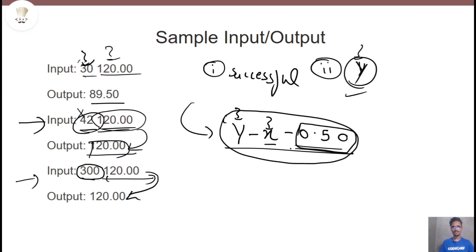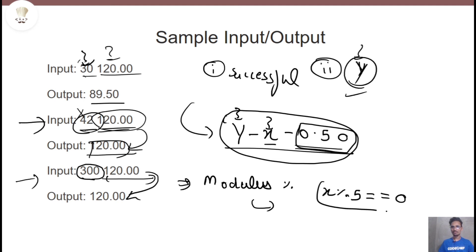One more thing: how do you check if X is a multiple of 5 or not? The answer is the modulus operator. The modulus operator tells us the remainder. If we take X modulus 5 and its value is 0, that means the remainder is 0 — modulus is simply remainder. If the remainder from dividing a number by another number is 0, this means the second number is a multiple of the first. So here we will apply the condition: if X % 5 == 0.